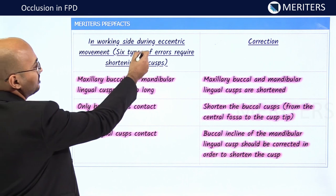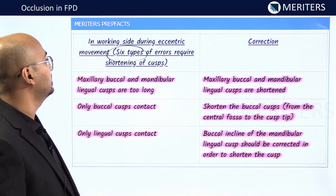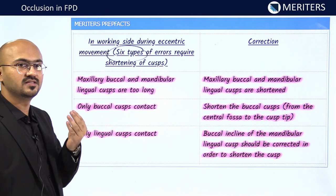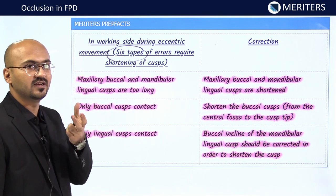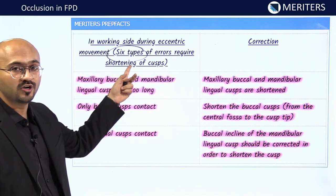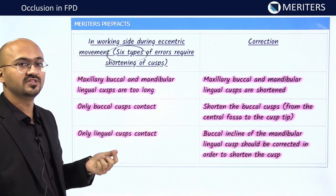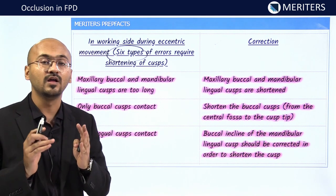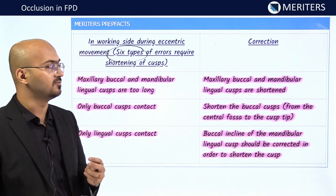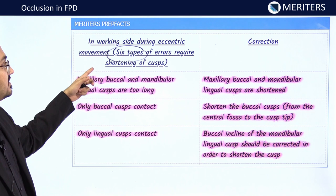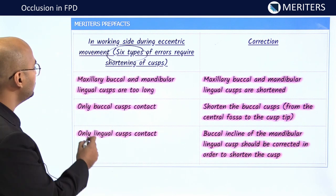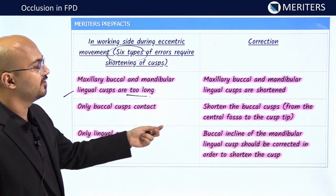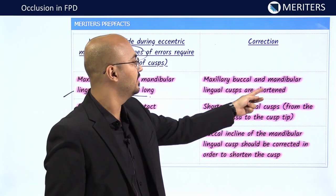There are six types of errors occurring on the working side during eccentric movements that specifically require shortening of the cusp. The first error: maxillary buccal and mandibular lingual cusps are too long — these are shortened. The second error: only buccal cusp is contacting, meaning it is too long — shorten the buccal cusp from the central fossa to the cusp tip throughout.